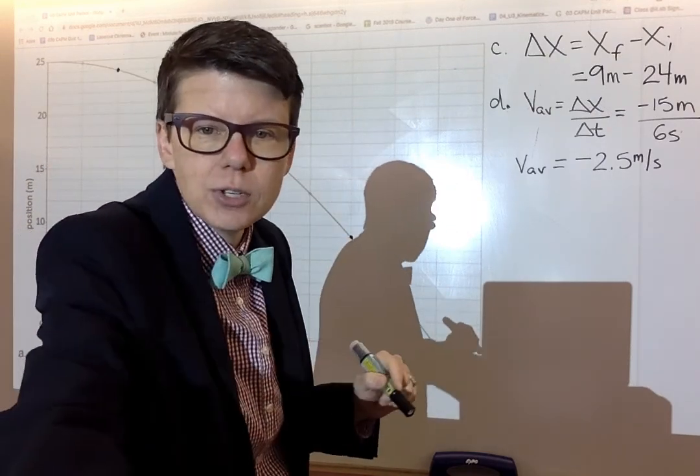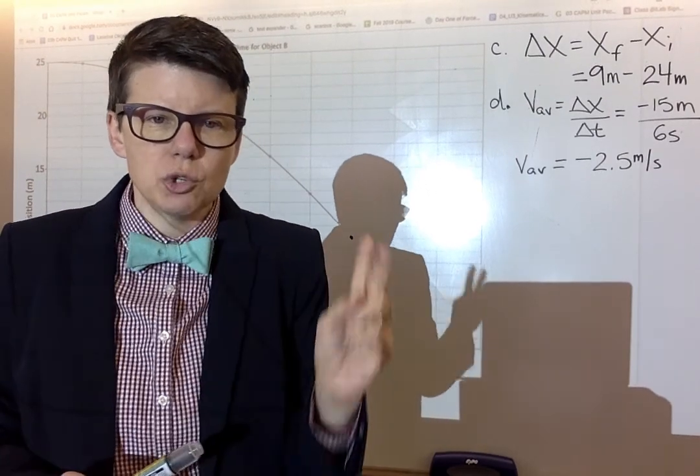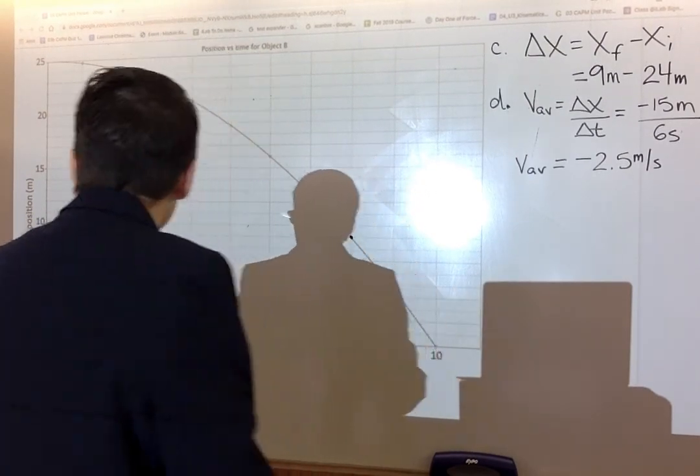Let's continue on. Part E says find the instantaneous velocity at two seconds, and again at eight seconds.